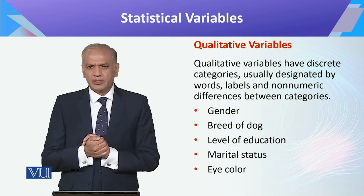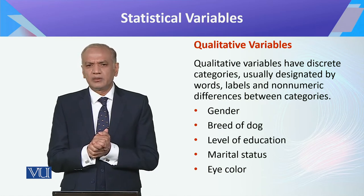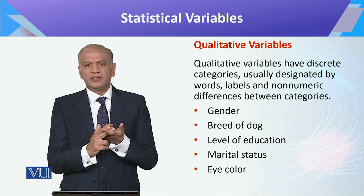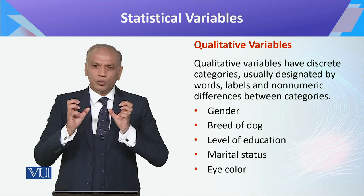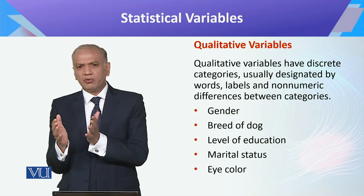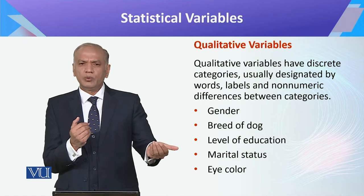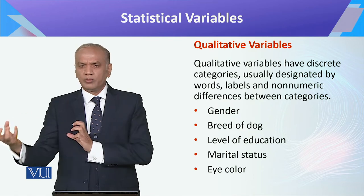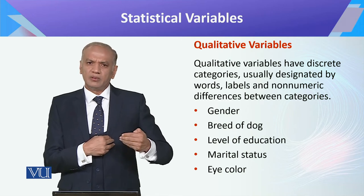Qualitative variables, as I mentioned, are attributes. These are basically about different things — your gender, your color, your nationality, and countless such things that are qualitative, as I mentioned — these are attributes of a particular thing. For example, number of trees, plants, flowers — these are all attributes of different things. When we count how many flowers there are, that becomes a numeric value, but in itself it is a discrete variable.